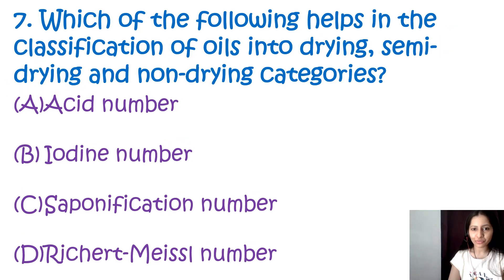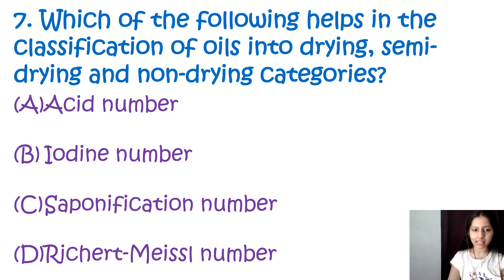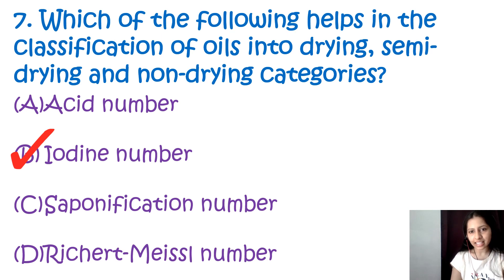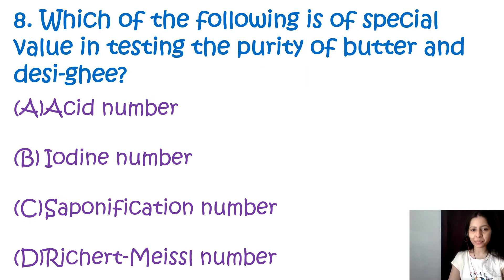Question number 7: Which of the following helps in the classification of oils into drying, semi-drying, and non-drying categories? Acid number, iodine number, saponification number, or Reichert-Meissl number. The correct option is B, iodine number. The classification of oil into drying, semi-drying, or non-drying categories is determined by the iodine number.